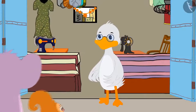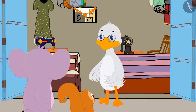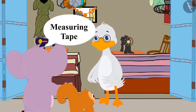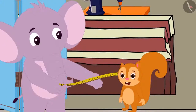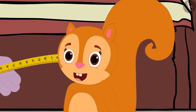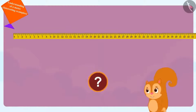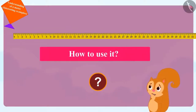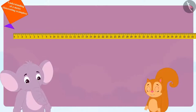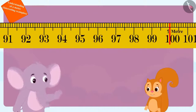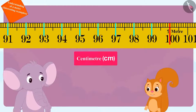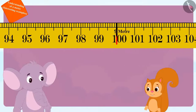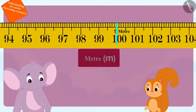Chanda and Appu have come to see the measuring tape at uncle's shop. Appu asked uncle for his measuring tape and showed it to Chanda. Chanda got very excited after seeing it and asked Appu how she must use it. Appu told Chanda to look at the measuring lines: the small vertical lines show the measurement of centimeters, and the long vertical lines show the measurement in meters.